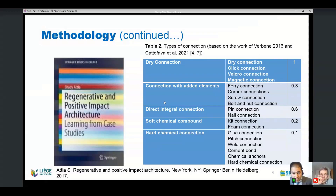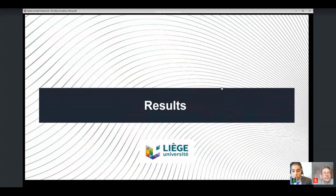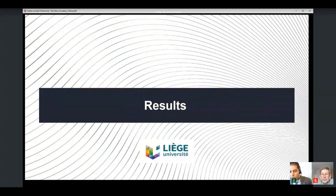This was a very extensive phase to check what was already available. After that, we started to present the results. Before presenting the results, I need to point out that we focused on the construction systems, the envelope system, the spatial function and use, and the building material and product services.